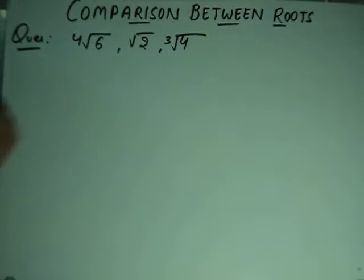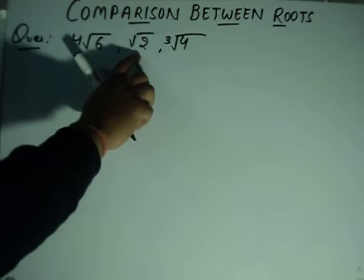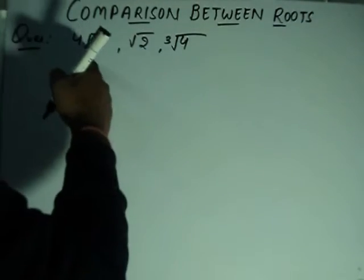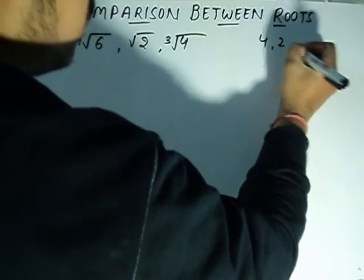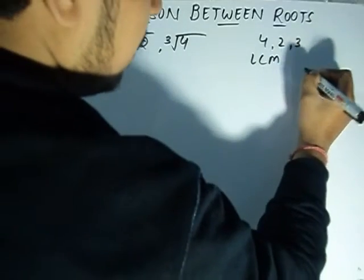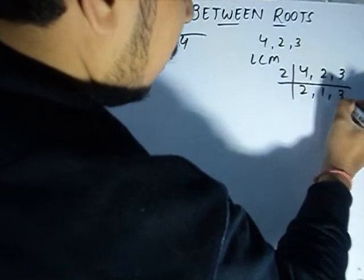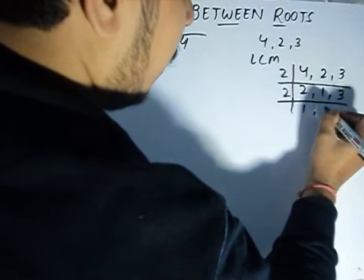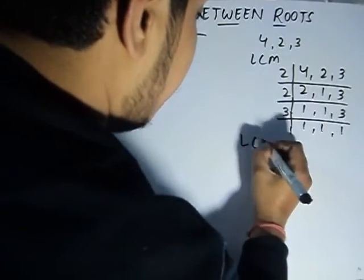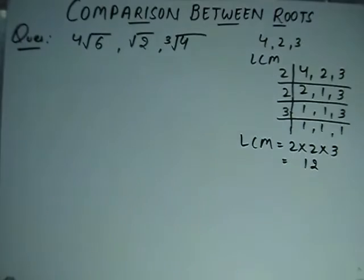In this method, we look at the orders of each root. We have a 6th root, a 3rd order root, a simple square root, and more 3rd order roots. We find the LCM of the indices: LCM of 2, 1, 3 and 1, 1, 3 gives us 2 × 2 × 3 = 12. So our LCM is 12.